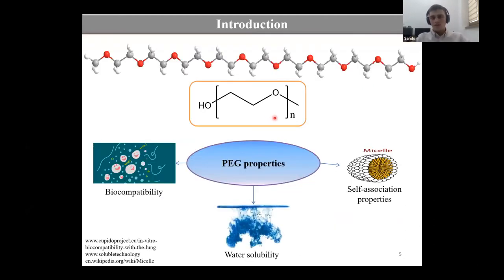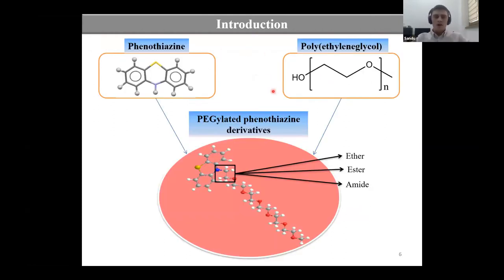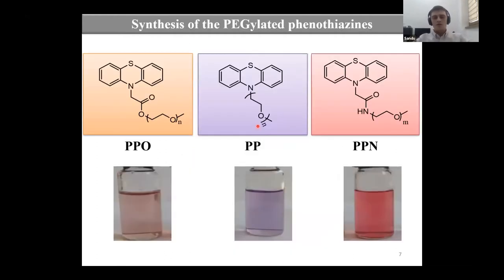Polyethylene glycol is a biocompatible FDA-approved synthetic polymer which is used for new drug formulations. This polymer has high water solubility and the ability to self-assemble. The aim of our work was to combine these two compounds to obtain pegylated phenothiazine derivatives. We obtained three of them by conjugating phenothiazine to polyethylene glycol through different functional groups: ether, ester, and amide. Here you can see those three compounds we synthesized and their water solutions.